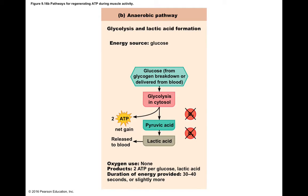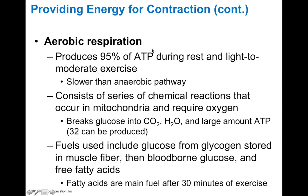Anaerobic pathways cannot support long-duration muscular activities, so aerobic respiration is also needed. Aerobic respiration produces about 95% of ATP during rest to light-to-moderate exercise. Although it is a slower pathway, it yields a lot more ATP per glucose molecule.